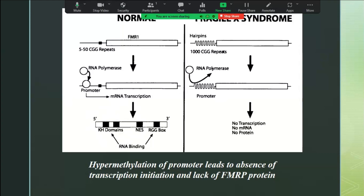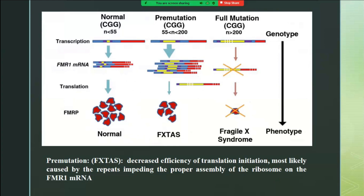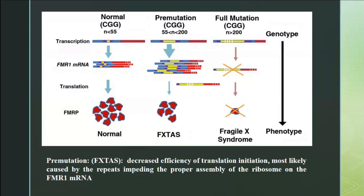In pre-mutation, the mechanism is different. There is no hypermethylation of the promoter; there is only decreased efficiency of translation initiation. Transcription happens, translation happens, but because of 55 to 200 repeats there is decreased efficiency, so the FMR1 mRNA formed is not sufficient or not good enough to perform its function. In full mutation — no mRNA, no protein, loss of function. In pre-mutation — mRNA is formed but not functioning properly, so the protein is also not formed properly.